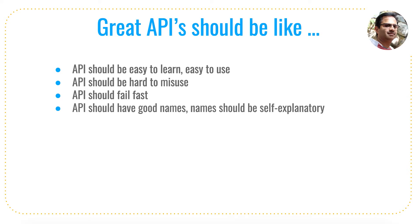The next one is: an API should have good names — names should be self-explanatory. For example, if you are writing an API to send an email or a message, it should be named 'send message'. If you are checking the status of an account, it should be named 'check status'. If it is not easily understood, it is not going to be helpful for others to use. That is what I mean — an API should have good names that are self-explanatory.